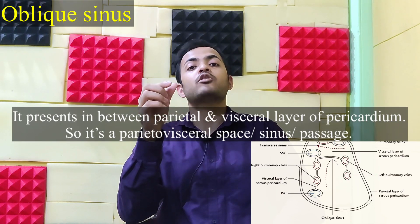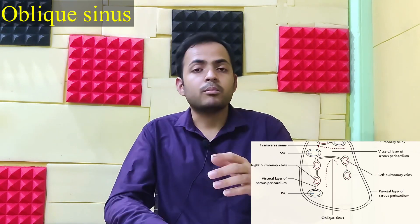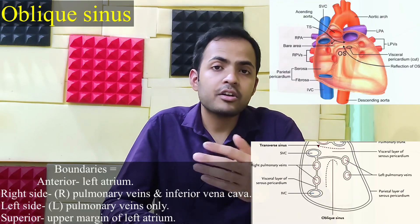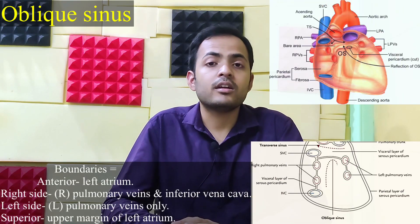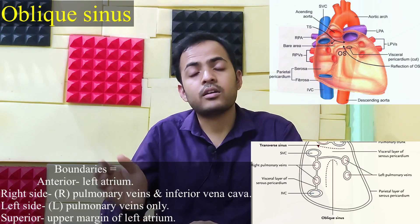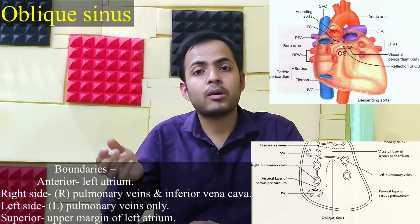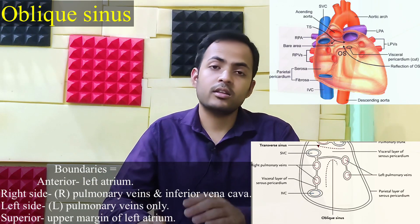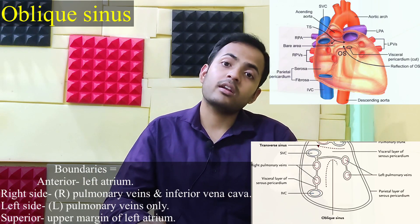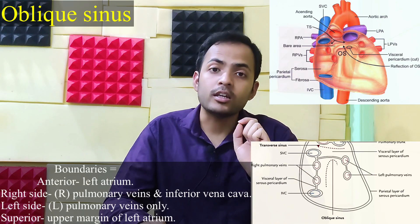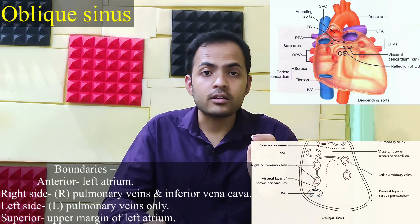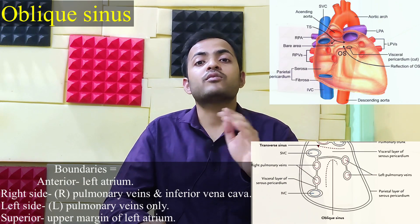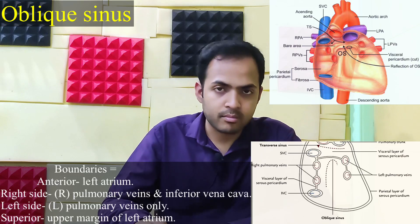For the boundaries of the oblique sinus: posteriorly you will find the left atrium; on the right side you will find the right-sided pulmonary veins; on the left side you will find the left-sided pulmonary veins; and superiorly you will find the upper margin of the left atrium. This is all about today's video — see you soon with the next topic, bye.